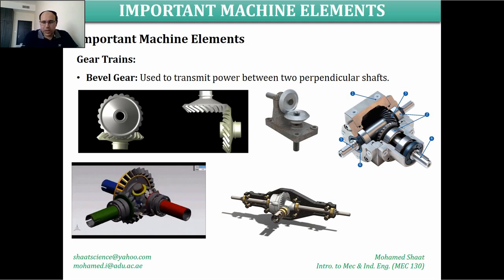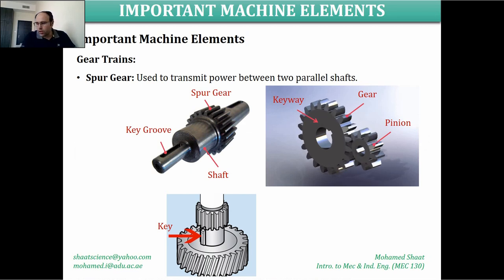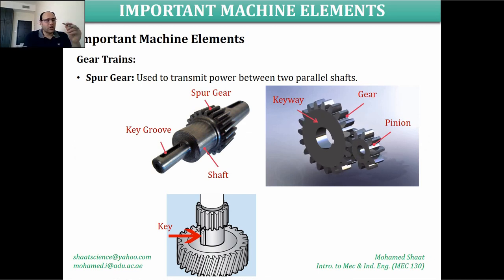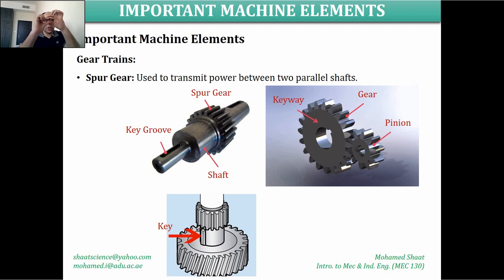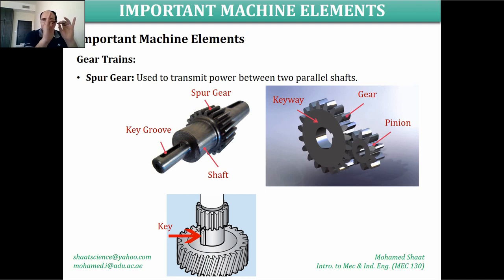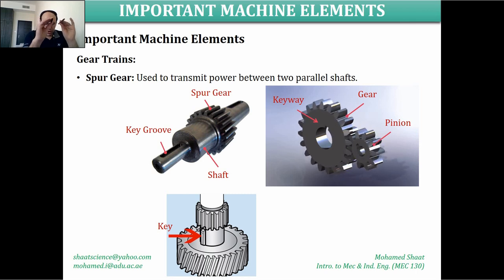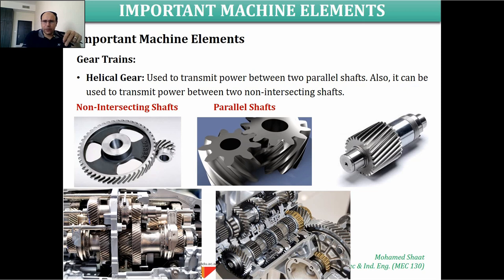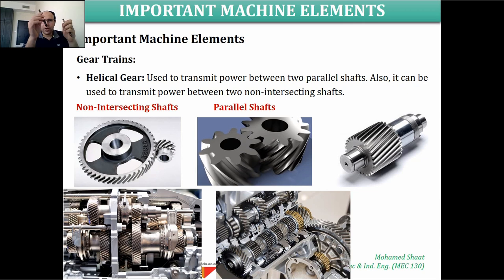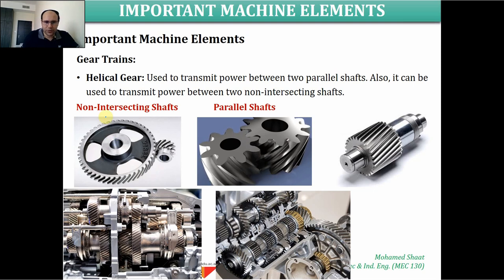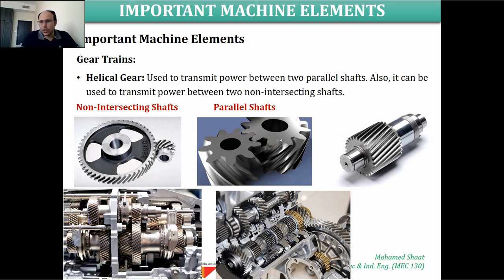Starting with the bevel gear — the spur gear is mainly used for transmitting power and motion between two parallel shafts, and the key idea is that the teeth are straight. The helical gear has helix-shaped teeth and can transmit power between two parallel shafts as well as two non-intersecting shafts. This is what distinguishes the spur gear from the helical gear.